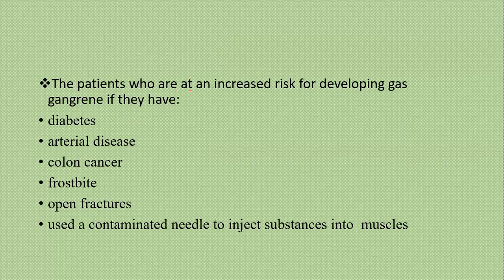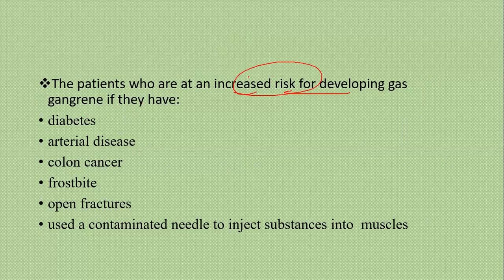Patients at increased risk for developing gas gangrene include those with Diabetes Mellitus, arterial disease, colon cancer, frostbite, open fractures, and those who use needles to inject substances into muscles. Patients with arterial disease have compromised blood supply, leading to the non-traumatic kind of gas gangrene. Patients with atherosclerosis have fatty deposits obstructing blood flow.